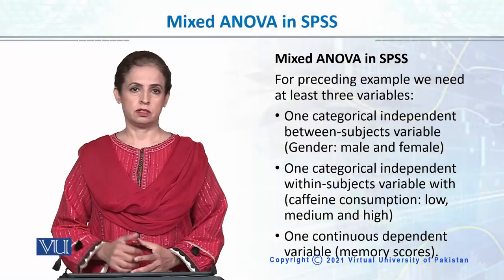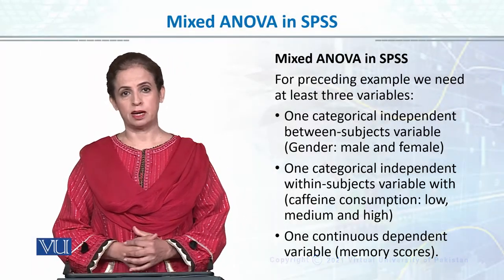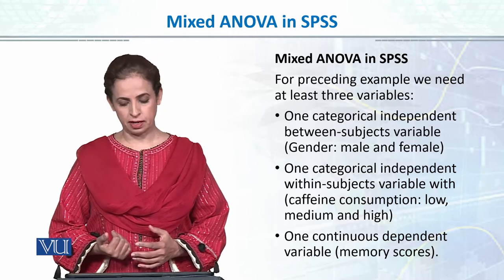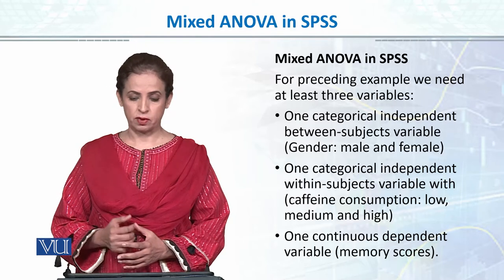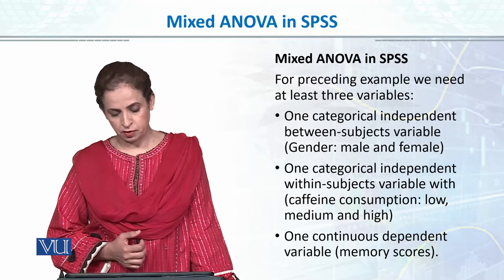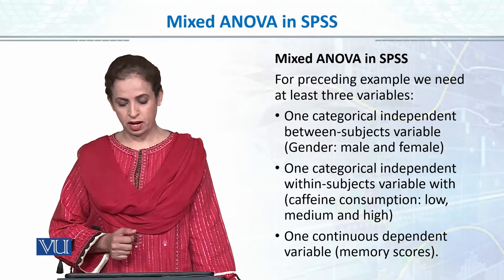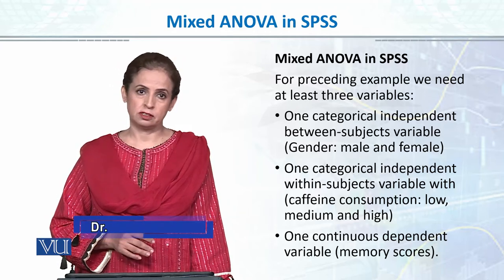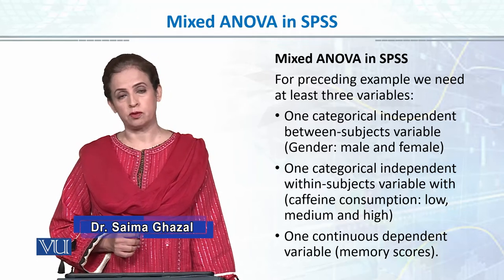Running mixed ANOVA in SPSS. For example, we have a between-group variable and a within-group variable. For this example, we need at least 3 variables: one categorical independent variable called the between-subject variable — in this case gender — one categorical independent variable which is the within-subject variable, which is caffeine consumption with 3 levels: low, medium, and high, and one continuous dependent variable.